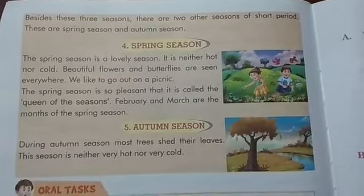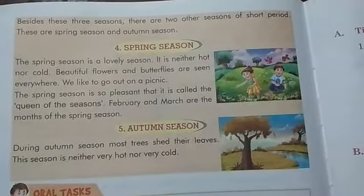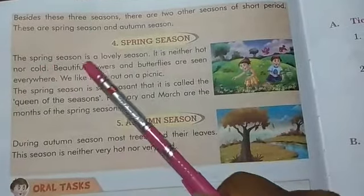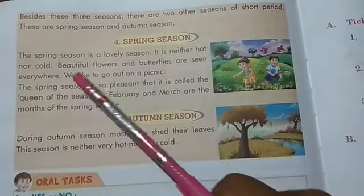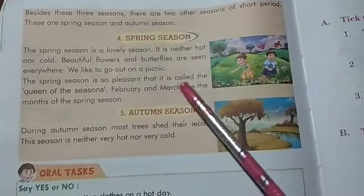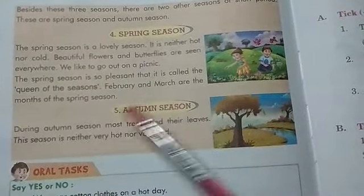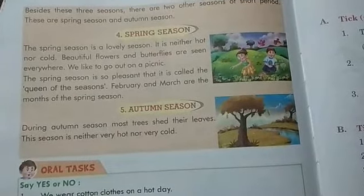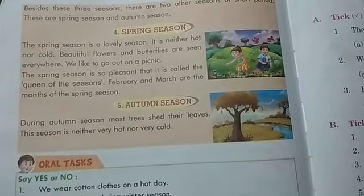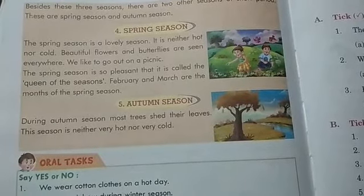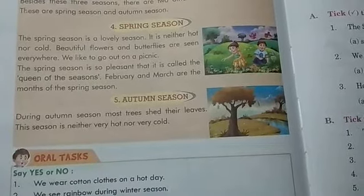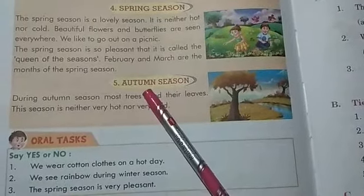There are two seasons that last for a very short period: spring season and autumn season. The spring season is a lovely season — it is neither hot nor cold. Beautiful flowers and butterflies are seen everywhere and we like to go out on a picnic. Spring season is called the queen of the seasons because it is very pleasant. It comes in the months of February and March.